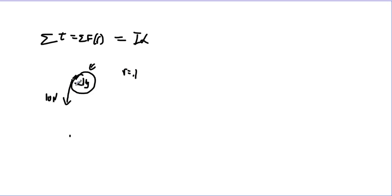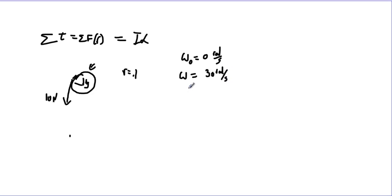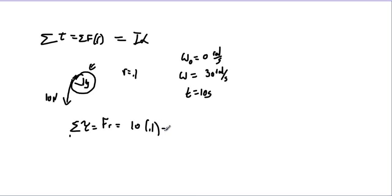The radius is 0.1 m, you pull with 10 newtons, the pulley has a mass of 1 kg. It goes from rest — initial angular velocity of 0 radians per second — and its final angular velocity is 30 radians per second, reached in 10 seconds. We want the moment of inertia. First, find the torque: torque equals force times lever arm, so 10 newtons times 0.1 meters equals 1 newton-meter.